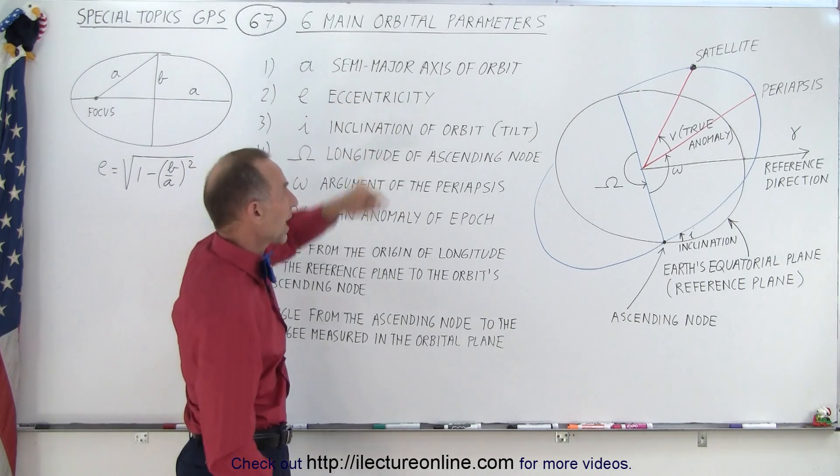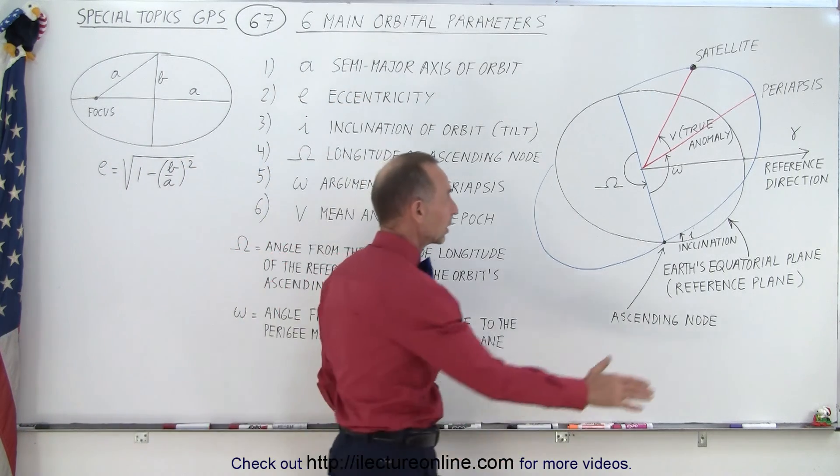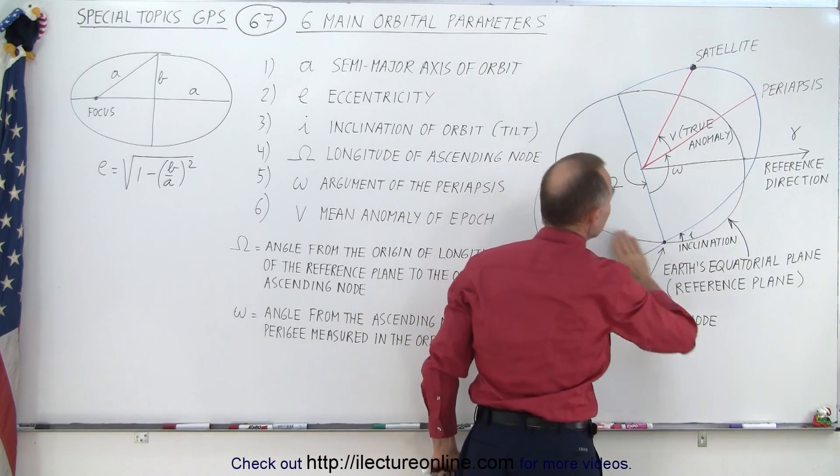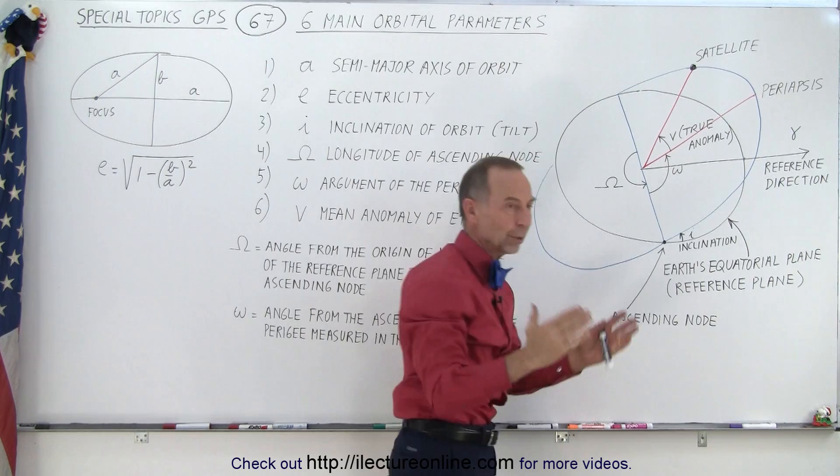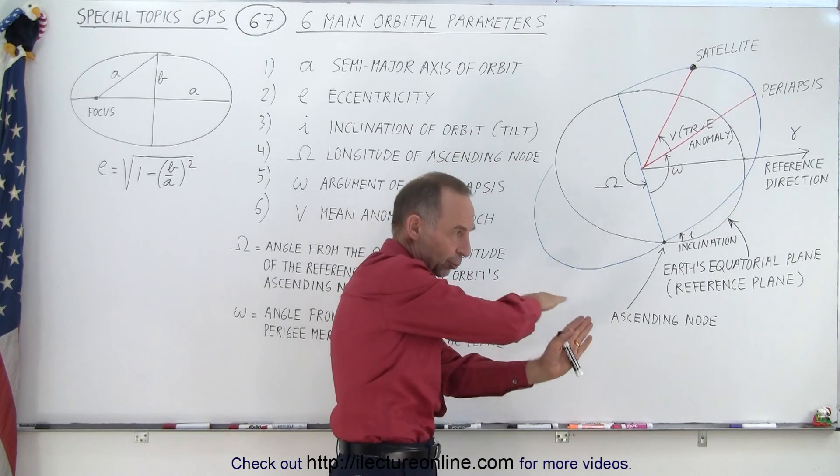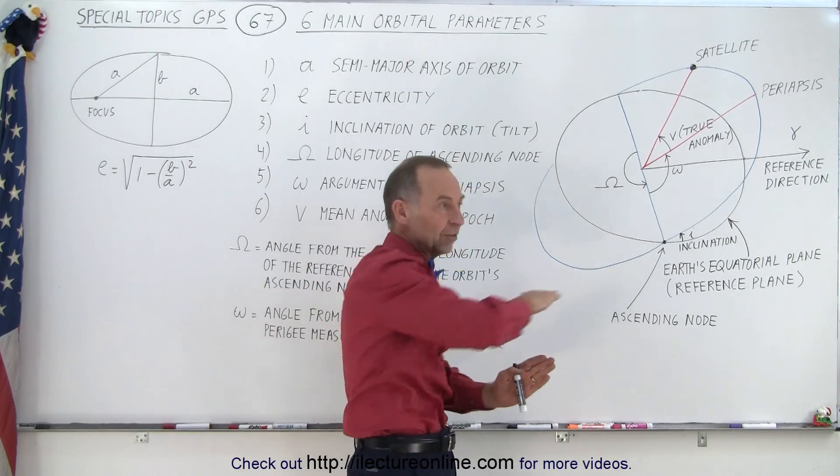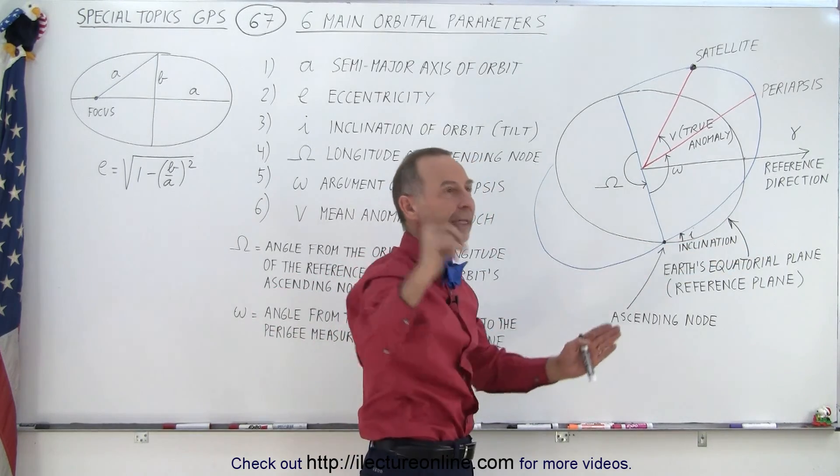Well first of all it's the semi-major axis of the orbit. So when you look at this drawing right here, this here represents the equatorial plane. So when you take the Earth and you cut it right in the middle through the equator and you extend it out into space, that is what we call the equatorial plane.